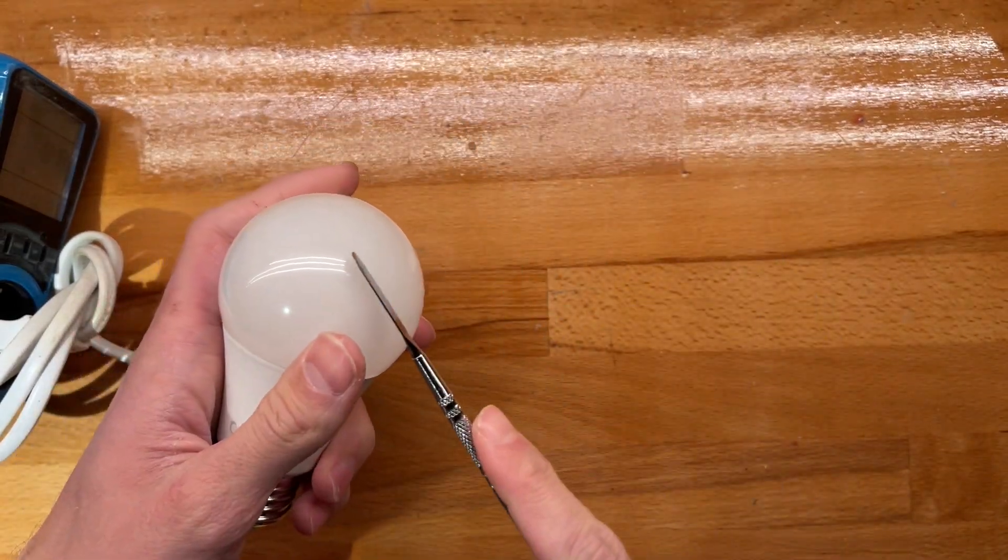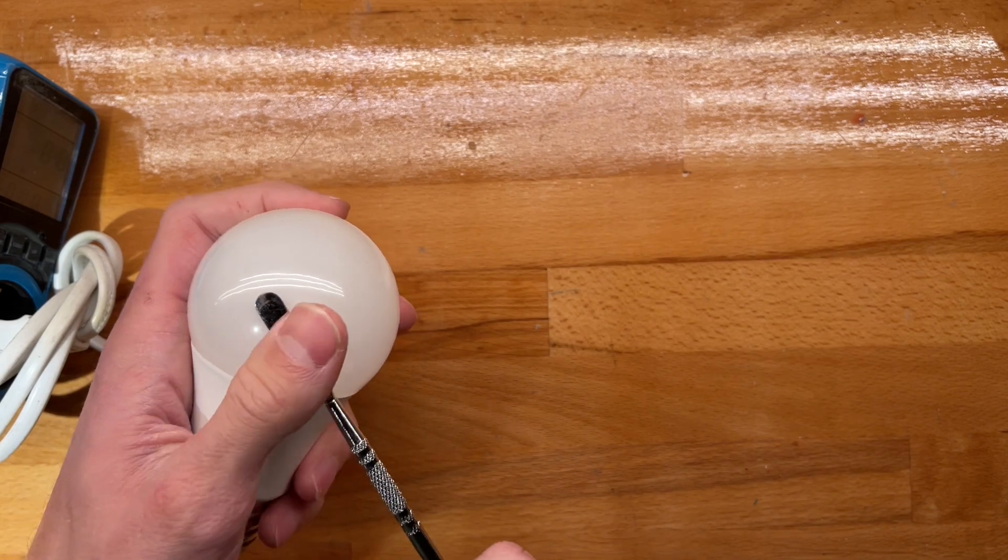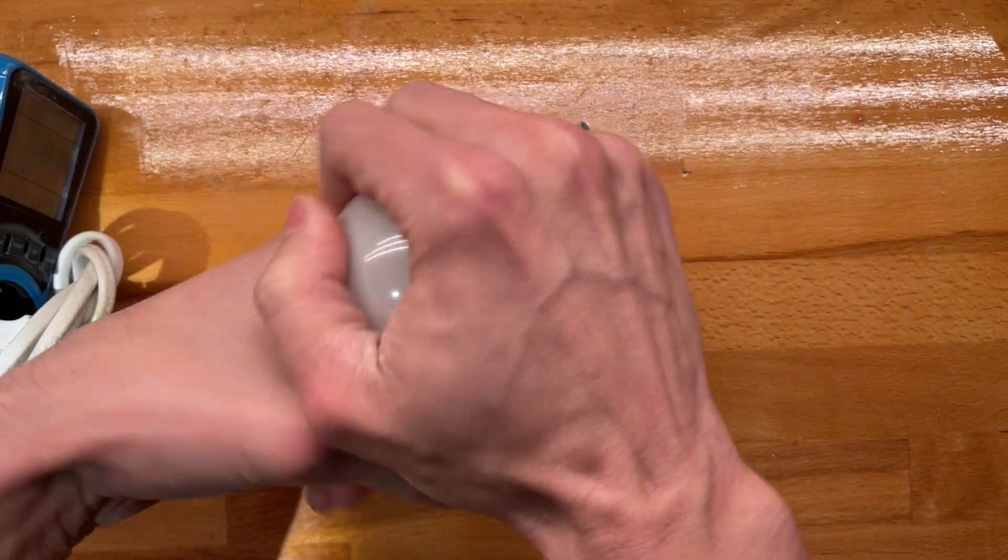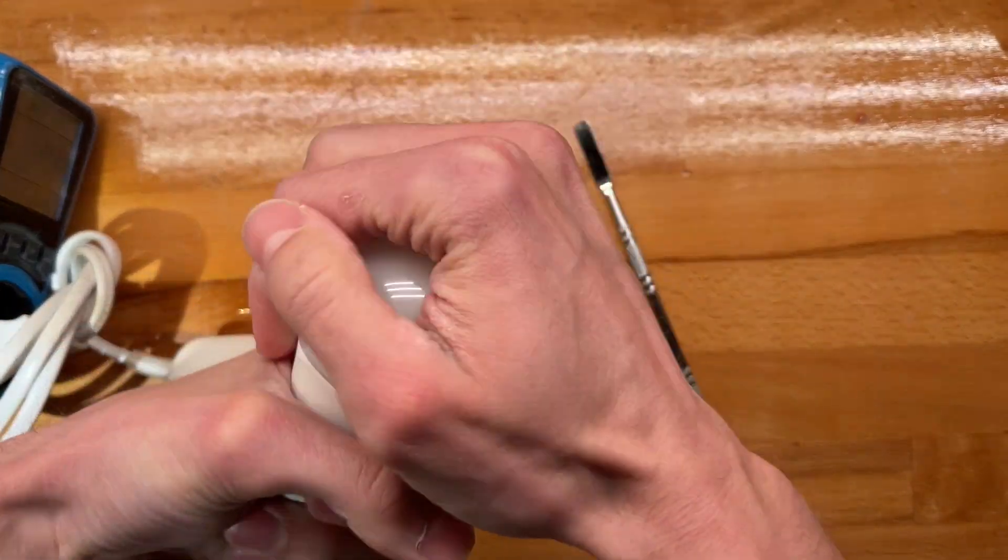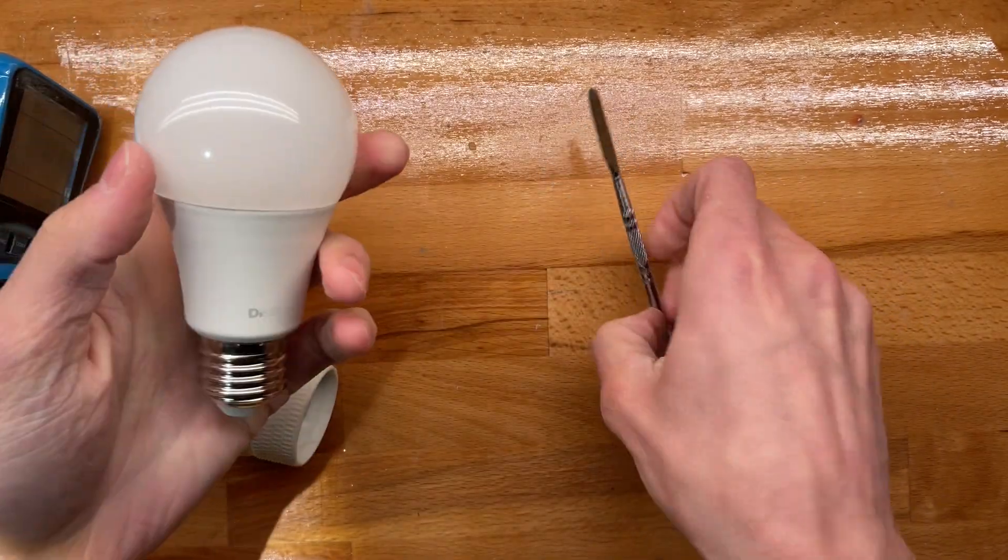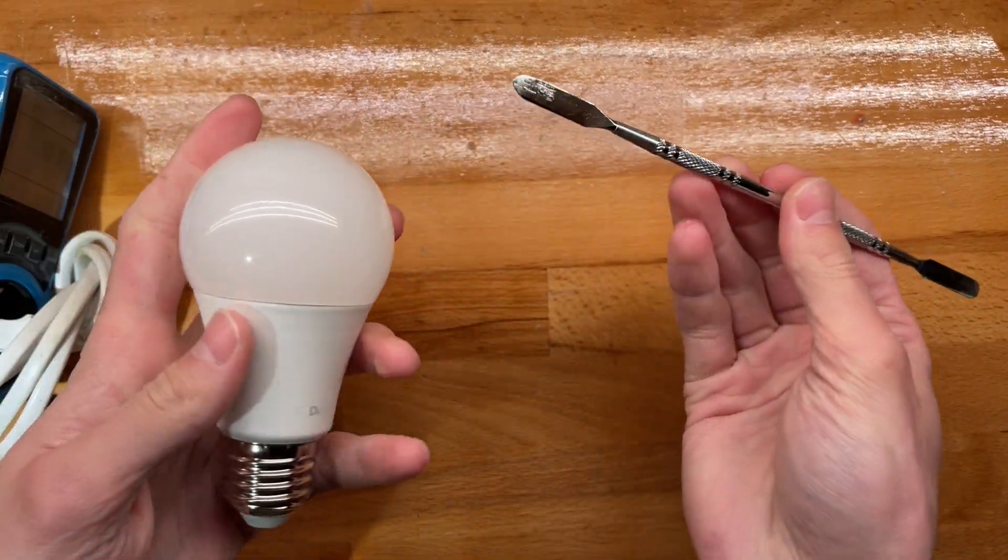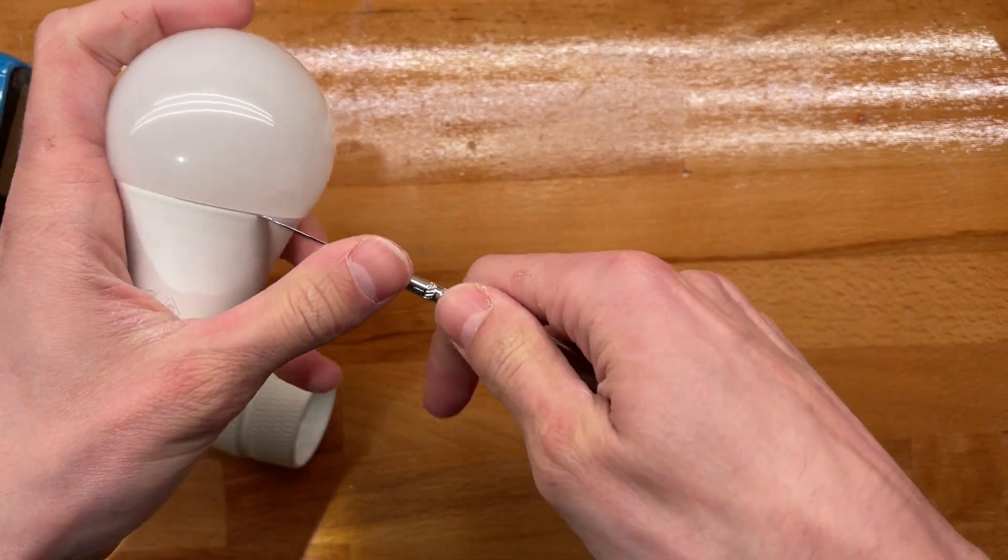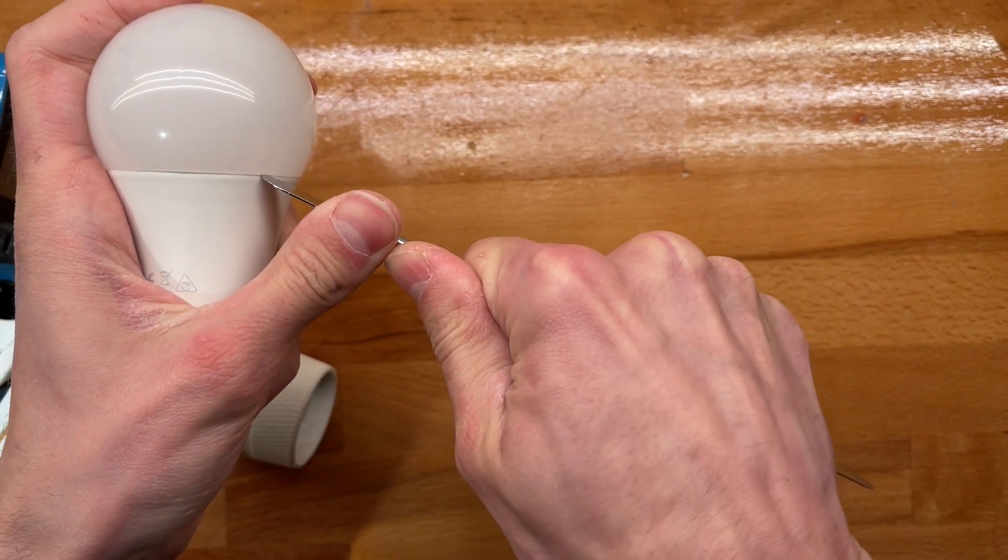First off, we'll need to open the dome. Be careful, some might be made of glass. This is definitely not the case. I don't know, it doesn't want to come off so you'll need one of these. You can buy these on AliExpress, they're pretty cheap, like two, three dollars.